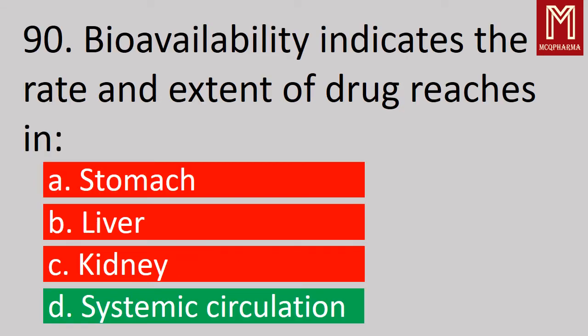Next, bioavailability indicates the rate and extent of drug that reaches — correct answer, Option D: Systemic circulation. Bioavailability is the rate of drug that reaches systemic circulation.